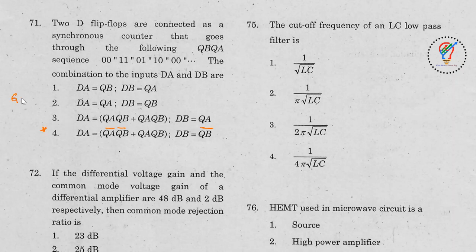This is a previous year GATE question, but while printing the question paper they made a mistake, so equal marks were awarded to all. The exact answer is: DA = QA-bar · QB-bar + QA · QB, and DB = QB-bar.